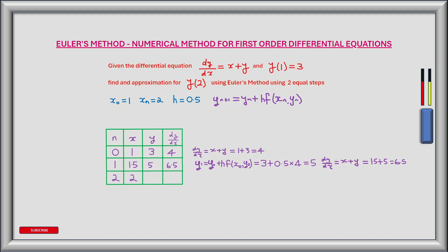Now we know that dy/dx equals x plus y. At this step x is 1.5 and y is 5. So 1.5 plus 5 is 6.5.